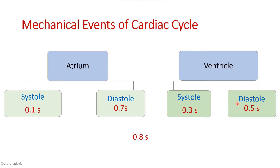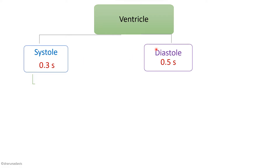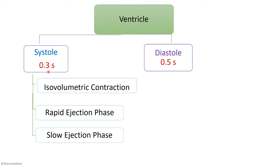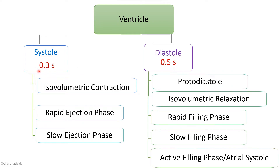Each ventricular systole and diastole is further divided into phases. A helpful mnemonic: systole is 0.3 seconds and has three phases; diastole is 0.5 seconds and has five phases. The three systolic phases are isovolumetric contraction, rapid ejection, and slow ejection. The five diastolic phases are protodiastole, isovolumetric relaxation, rapid filling, slow filling, and active filling — which coincides with atrial systole.